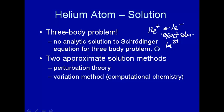Well, there are two approximate ways to solve the Schrödinger equation in general. These two classes of techniques are called perturbation theory and variational method, or variation method.